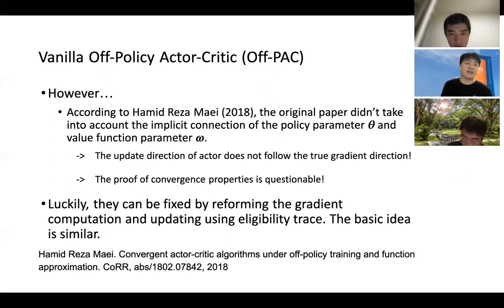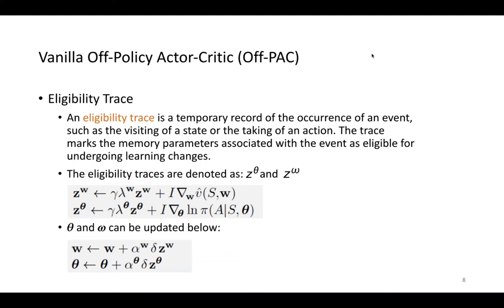Note that the basic idea is similar. I will briefly introduce the eligibility trace. An eligibility trace is a temporal record of the occurrence of an event, such as the visiting of a state or the taking of an action. The trace marks the memory parameters associated with the event as eligible for undergoing learning changes, which is why it is called an eligibility trace. The eligibility traces in this case are denoted as z_theta and z_omega, and their update rules are as follows.